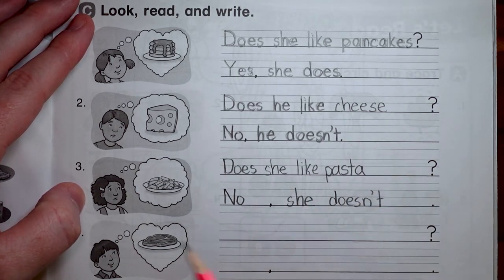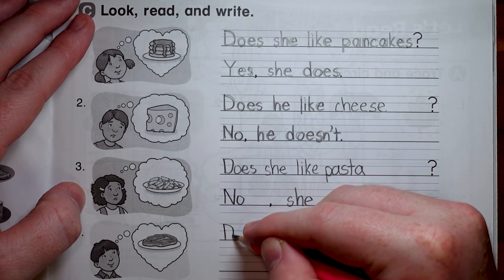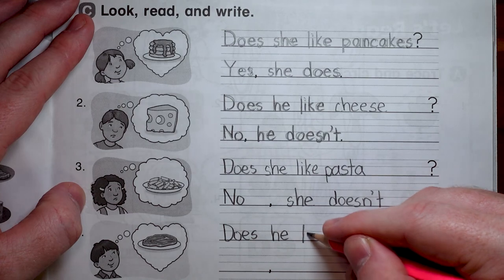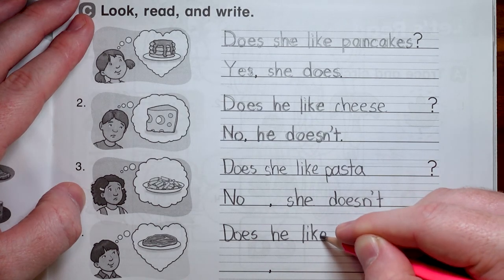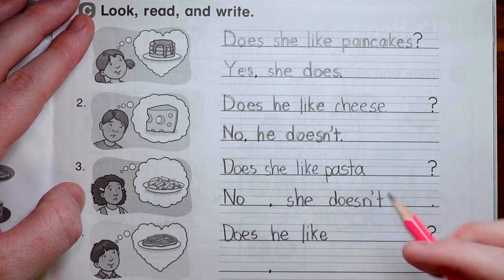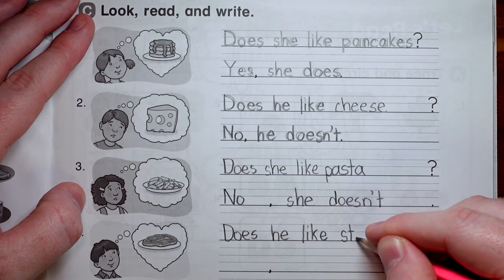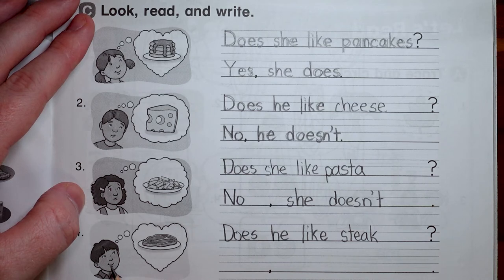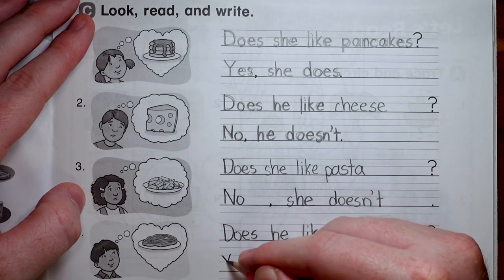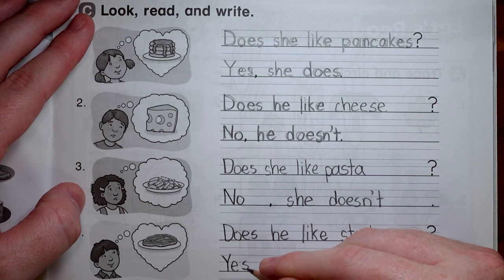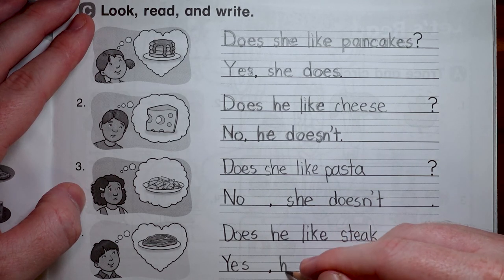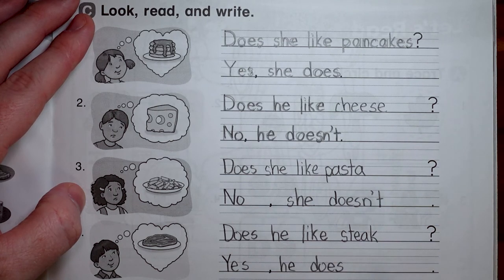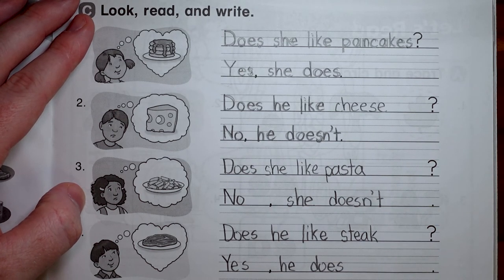The last one is a boy. So does he like steak? And he's got a big smile on his face. So yes. Yes, he does. Yes, comma, space. He. Does. Yes, he does. Part C is all done.